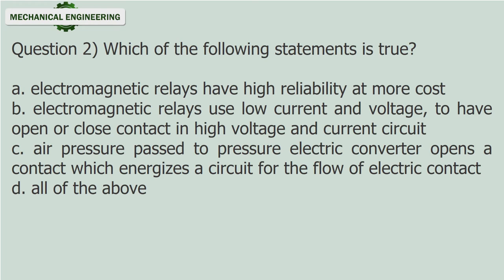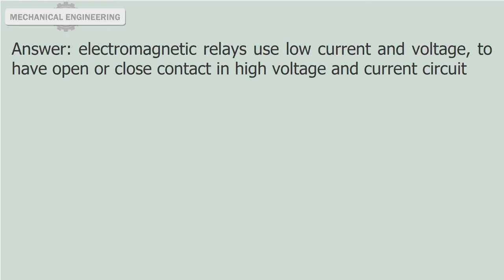Question 2: Which of the following statements is true? A. Electromagnetic relays have higher reliability at more cost. B. Electromagnetic relays use low current and voltage to have open or close contact in high voltage and current circuit. C. Air pressure passed to pressure-electric converter opens a contact which energizes a circuit for the flow of electric contact. D. All of the above. Answer: Electromagnetic relays use low current and voltage to have open or close contact in high voltage and current circuit.